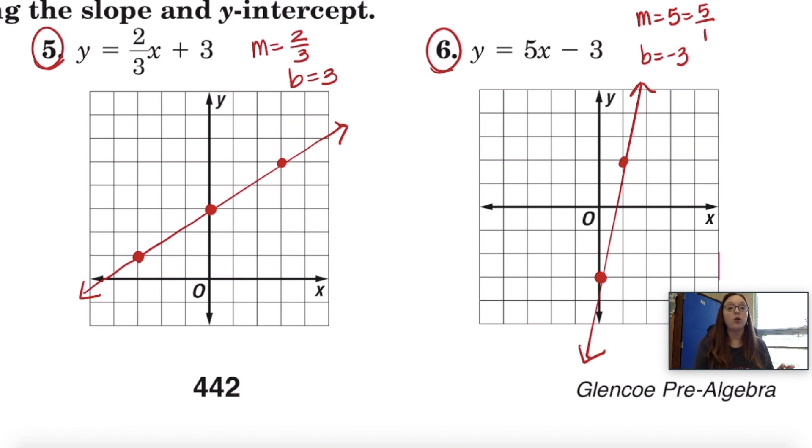For number six, the slope is five or five over one, and the y-intercept is negative three. So I plotted negative three on the y-axis and then I'm going to go up five, one two three four five, and then right one and plot my point. I don't have enough room to do a third point for number six. So that's it.